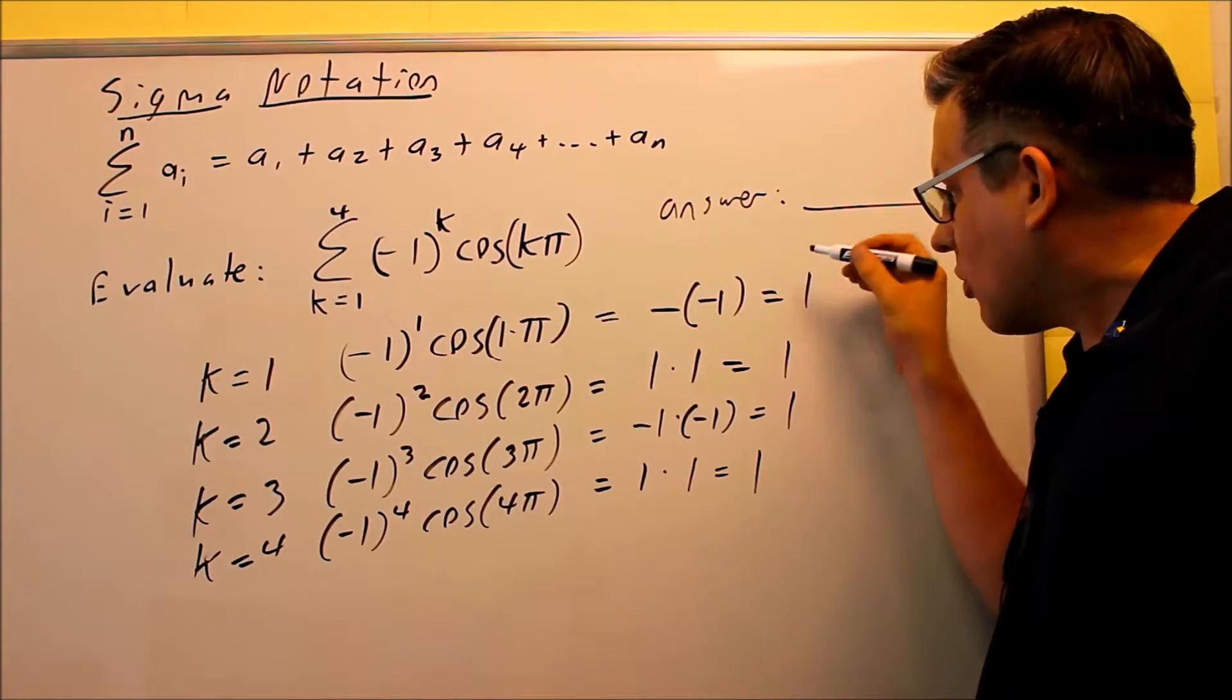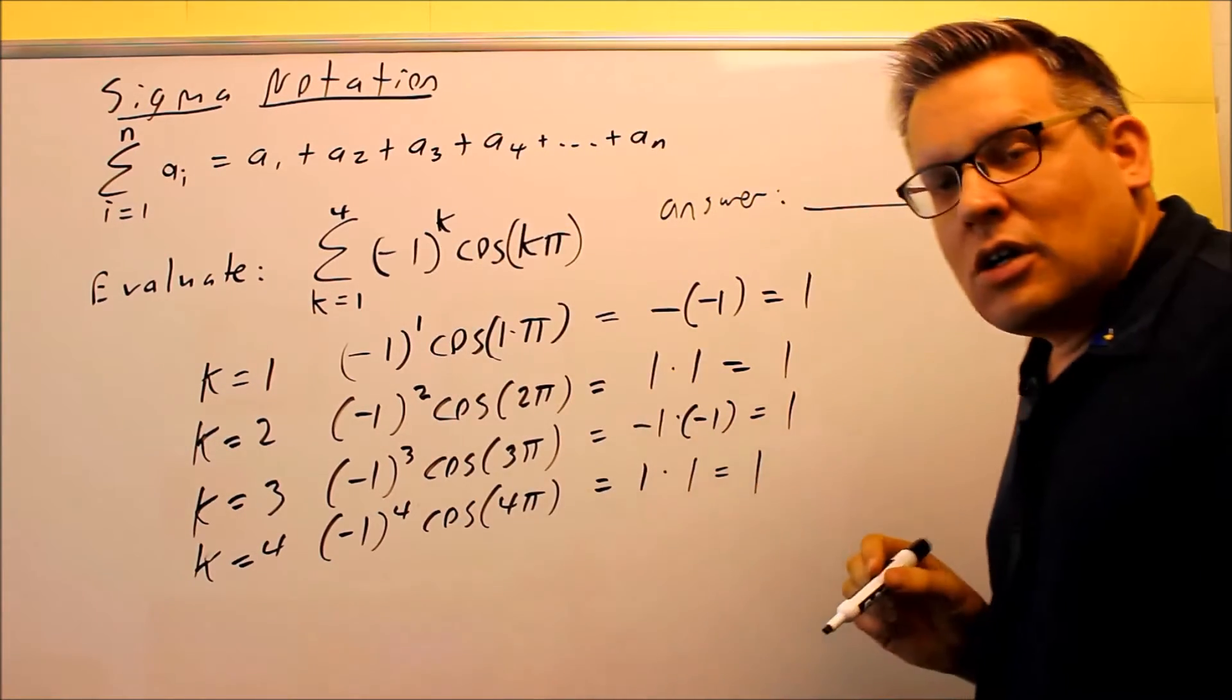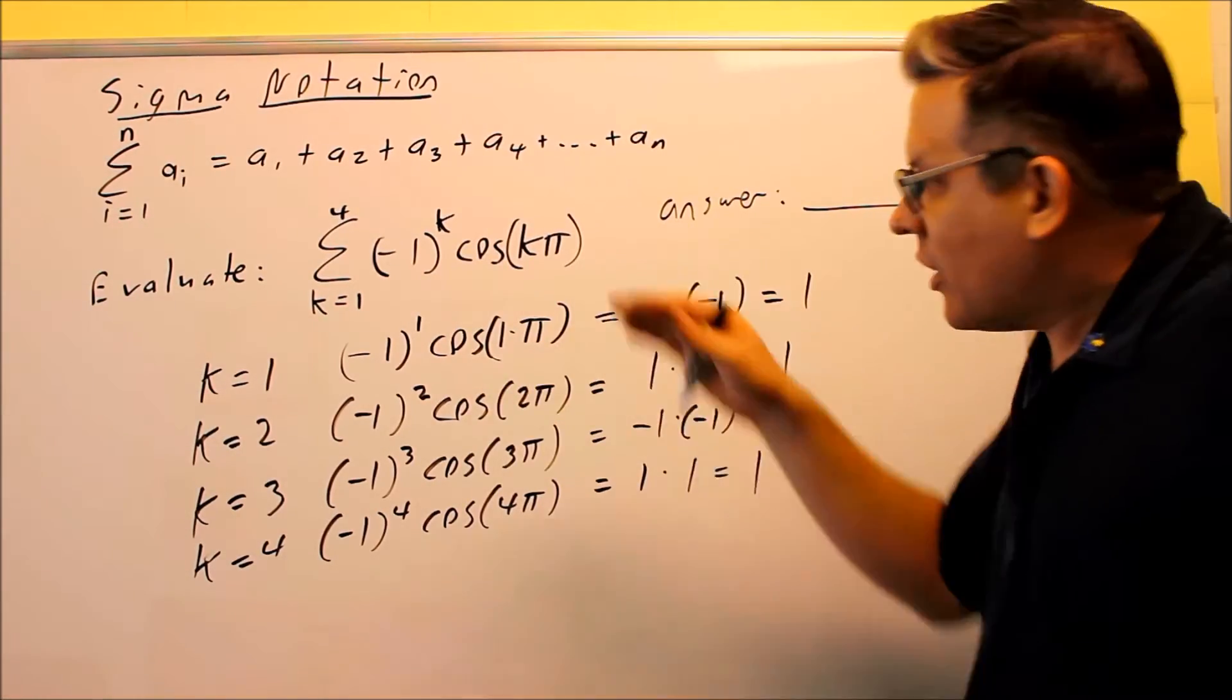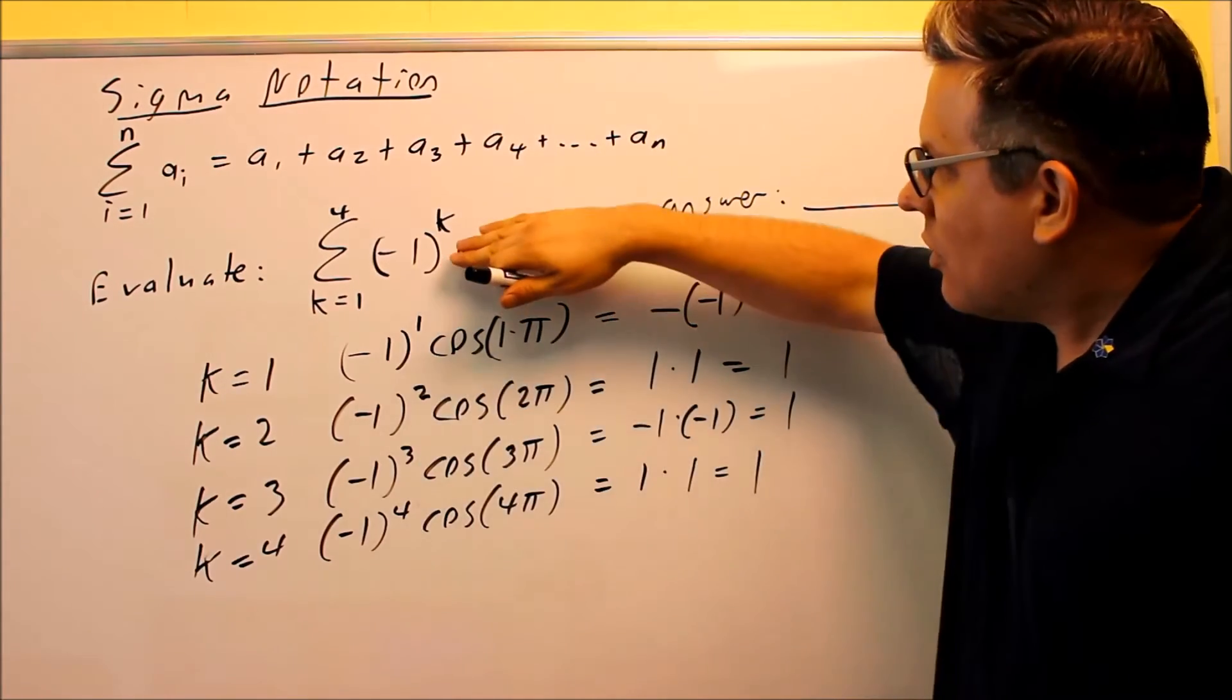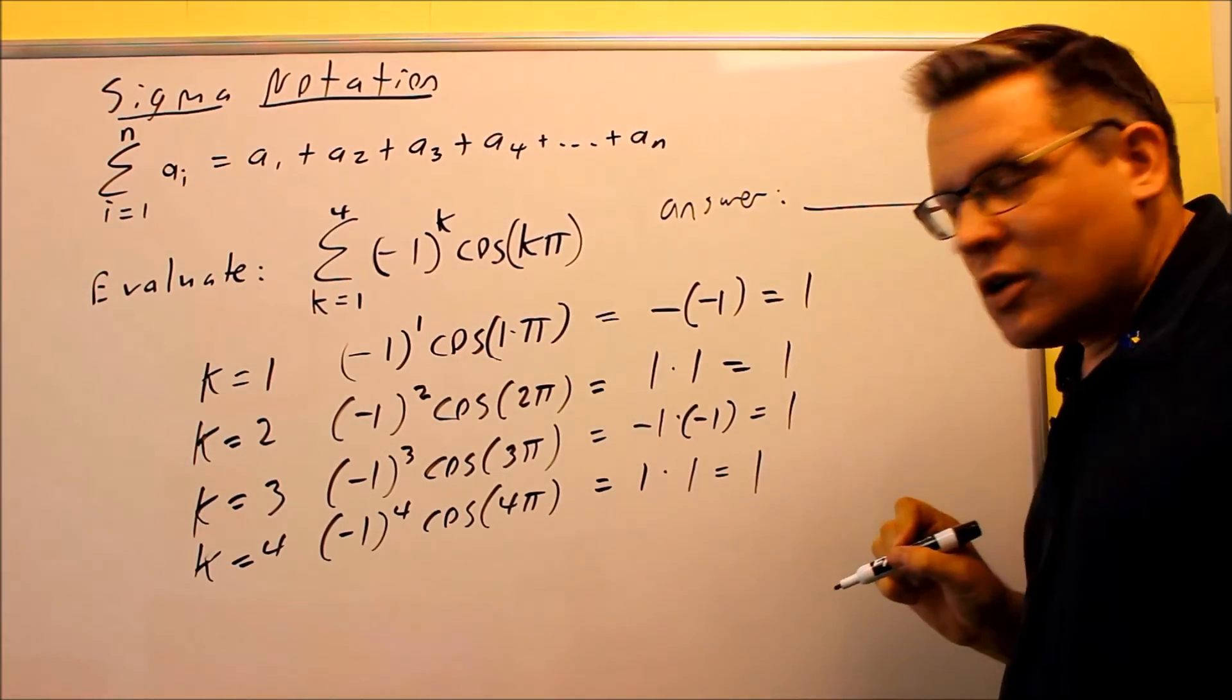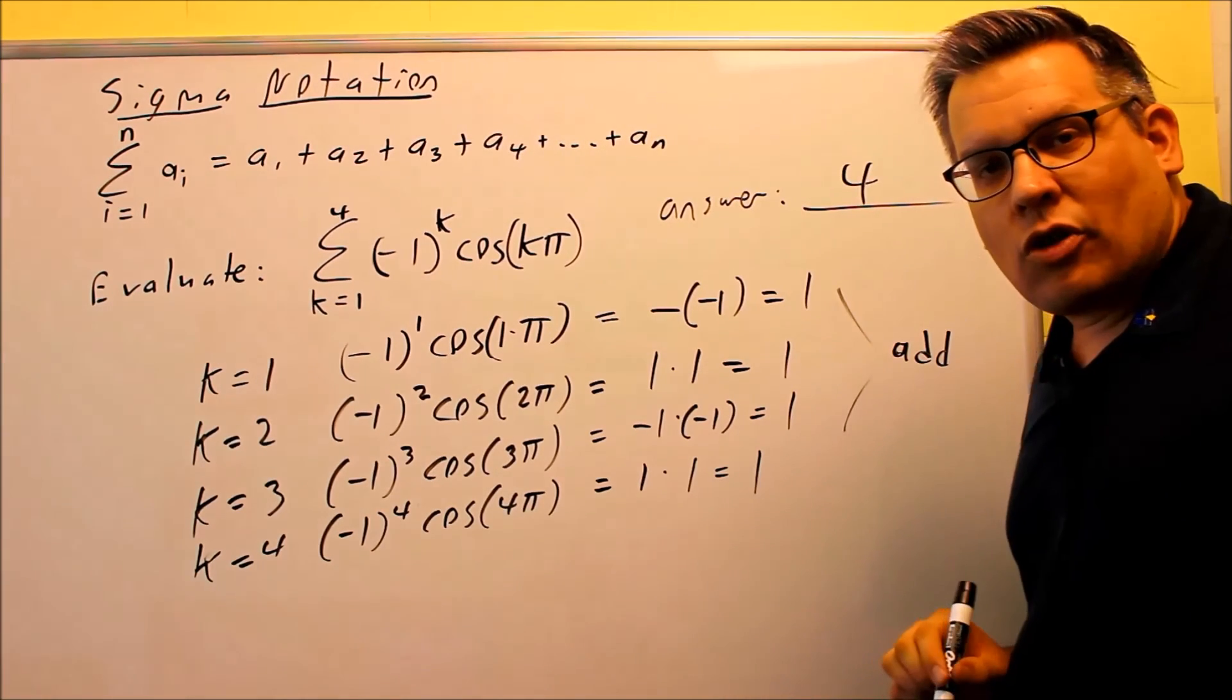So it seems like every single time we do this, we're always getting 1. Notice that whenever we have this part right here, a negative 1 raised to a k, if we had that part only, we'd just have alternating signs that go positive, negative, positive, negative. So this is basically a way you can get an alternating sequence by having something like that. But because we have a cosine next to it, it kind of cancels out any negatives, because it's always opposite every time. And so now all we're going to do is add this together. That means that our final answer is going to be 4.